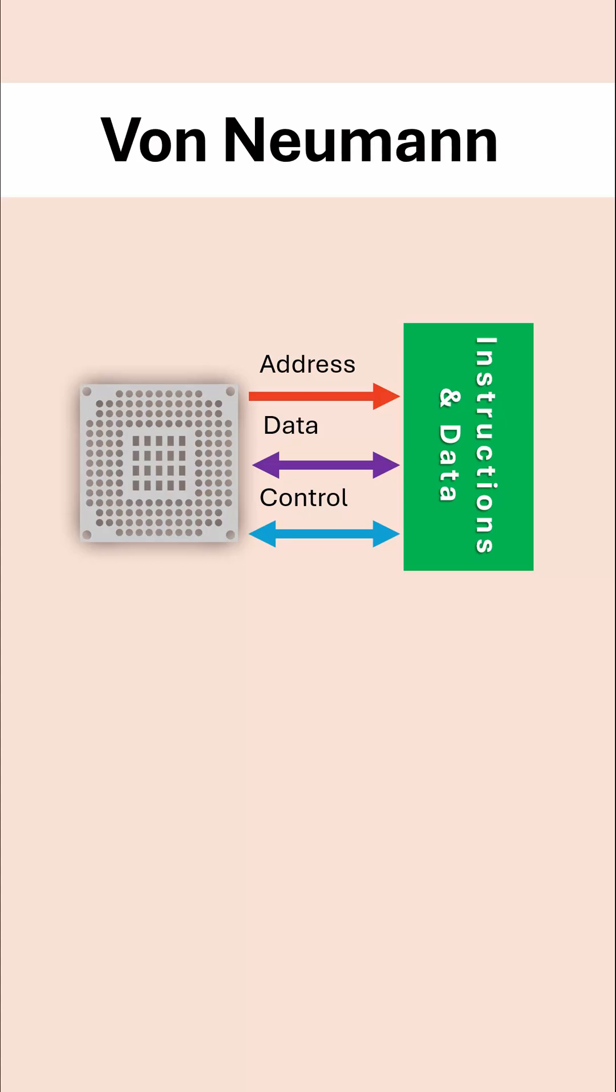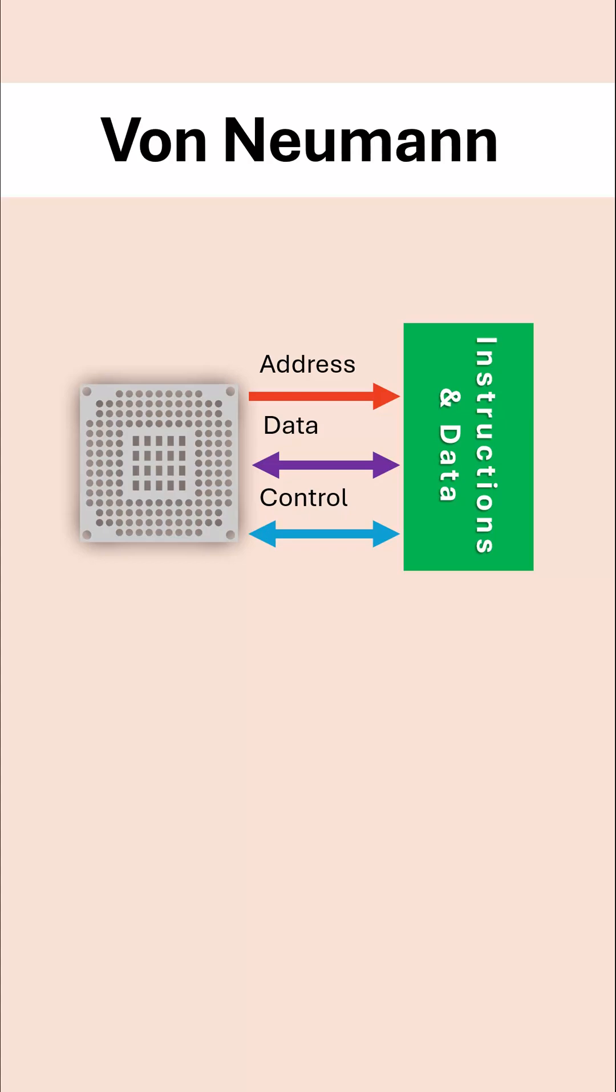Because the data bus has to carry both instructions and data, we can have a bottleneck where they're waiting for each other to be sent. We can't send instructions and data down the data bus at the same time.